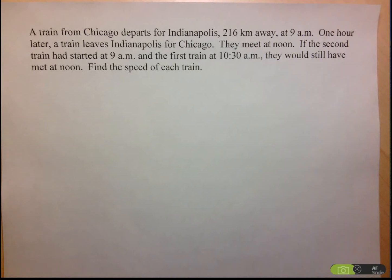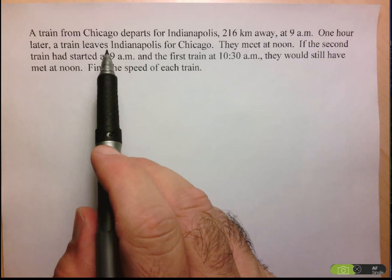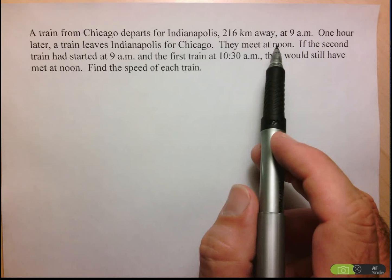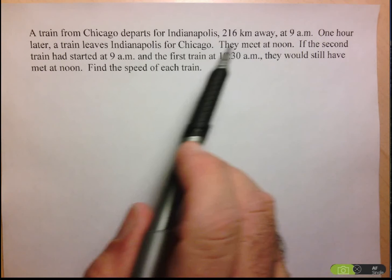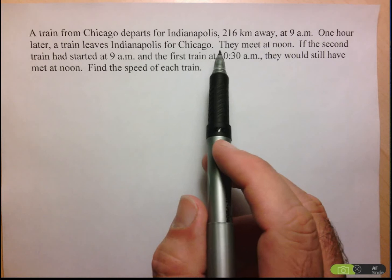Hi folks, we're going to take a look at the solution to this old-style train problem. So let's take a look at what's going on. We have a train that leaves Chicago for Indianapolis, which is 216 kilometers away, at 9 a.m. Then one hour later, so that means at 10 a.m., a train leaves Indianapolis towards Chicago, and we're told that they meet at noon.